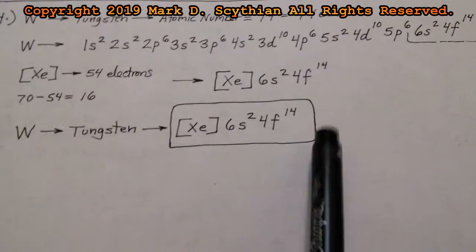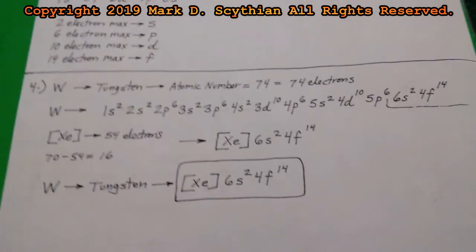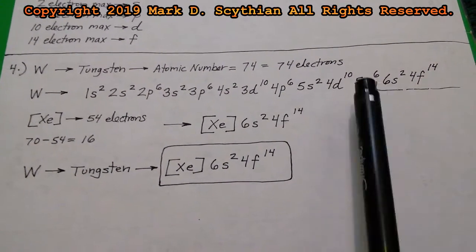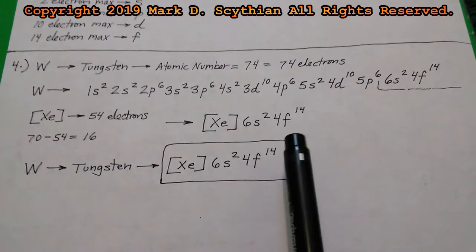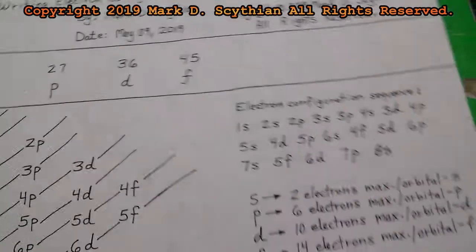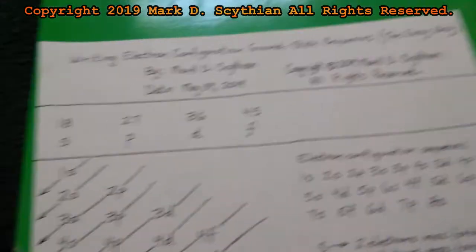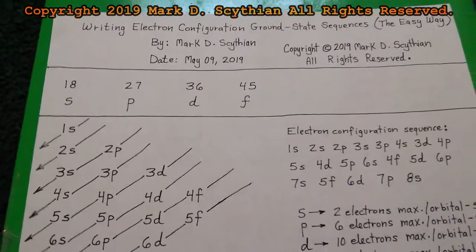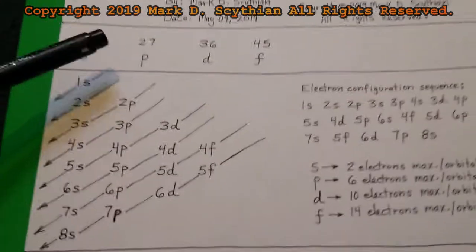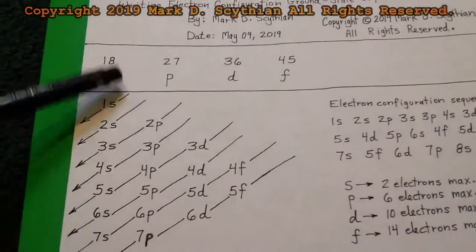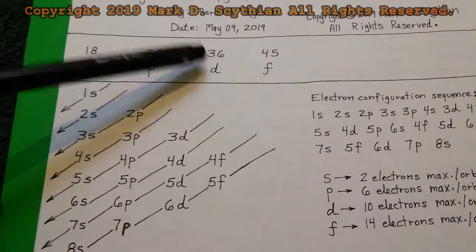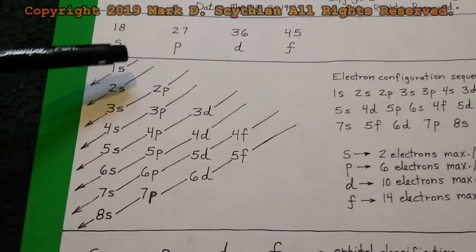On a chem exam you'll still need to write this out so you know exactly where to add to the inert gas abbreviator to get the right answer. Many people struggle with writing ground state electron configurations. All you do is assign codes 18, 27, 36, 45 — meaning 1 to 8 for S, 2 to 7 for P, 3 to 6 for D, 4 to 5 for F.